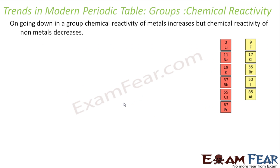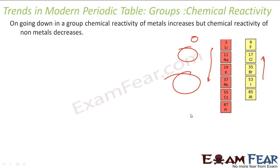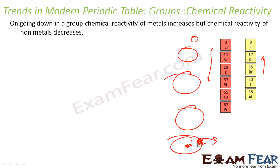If you talk about chemical reactivity, the same principle applies — chemical reactivity of the metal increases and reactivity of the non-metal decreases. The same funda applies because the size of the atom is increasing. This electron goes out easily because the nucleus is not able to control it, so the element is more reactive. In the case of non-metals, since the atom is big, it is not able to attract new electrons, so it is less reactive.